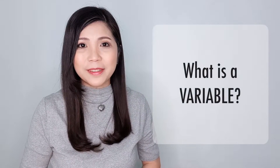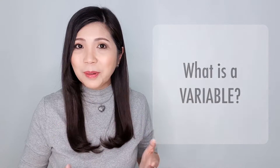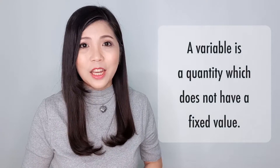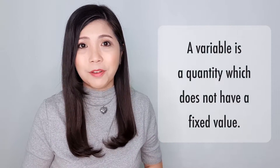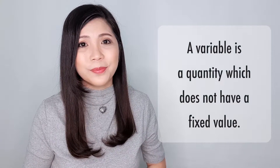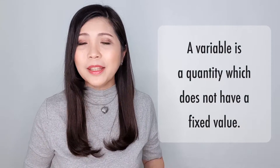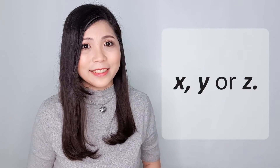What is a variable? A variable is a quantity which does not have a fixed value. A variable is commonly represented by a letter, for example, x, y, or z.